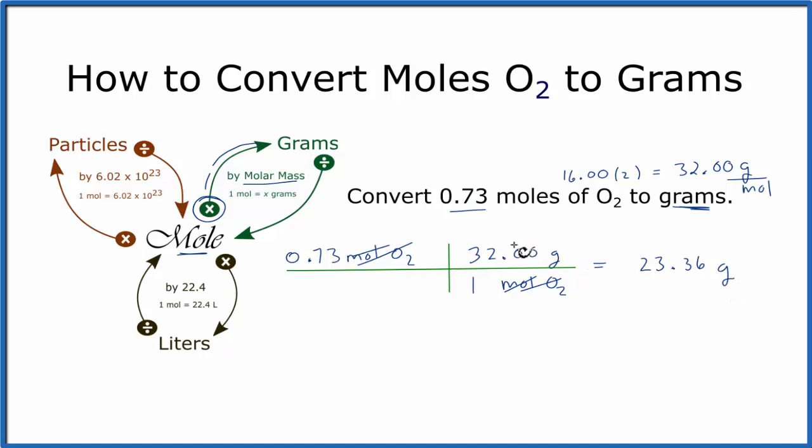You can kind of think of it this way. You put the desired quantity. We're trying to find grams. So grams goes on top over the given. We're looking for moles. That's the given. So we put our grams over our moles, and that way we know things cancel out. Sometimes it helps to think of this as desired over given.